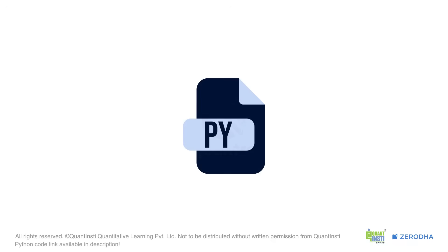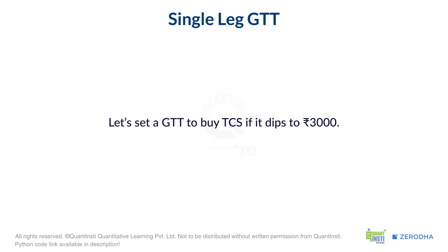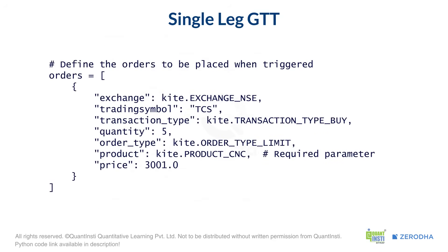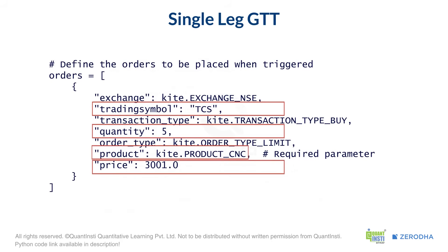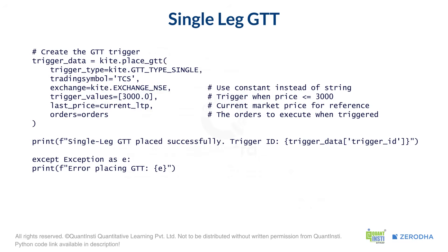Let's create a single leg GTT to buy a stock on a dip. Let's say we want to buy TCS if it ever falls to Rs. 3000. We define the actual order inside a list of dictionaries called orders — specifying the symbol, quantity, product, and the limit price. Then in the place GTT call, we set the trigger type to single and provide the trigger values — a list with our desired price of Rs. 3000. We then pass in the orders list and also provide the last price, which is a requirement for placing GTTs.